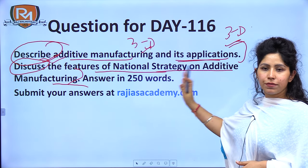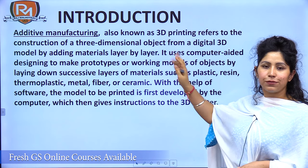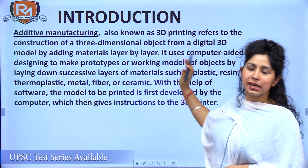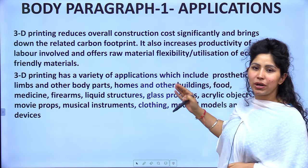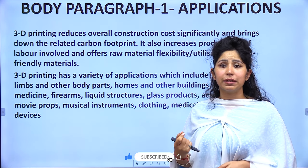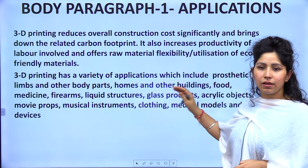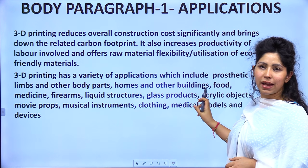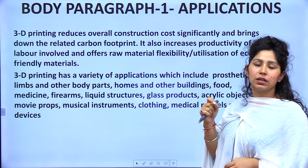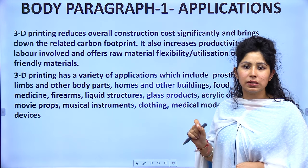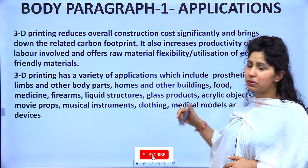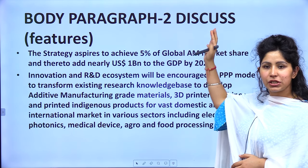Let me give you a brief overview of the answer structure. In the introduction we define what is additive manufacturing. Then in body paragraph 1, we explain 3D printing further — what benefits it offers — and in a short format we also write the applications. Benefits plus applications give justification for the uses of 3D printing and justify why this question is important, leading into body paragraph 2 which is your discuss part.